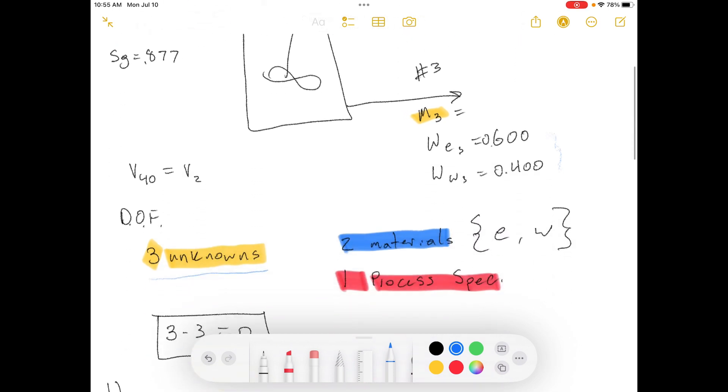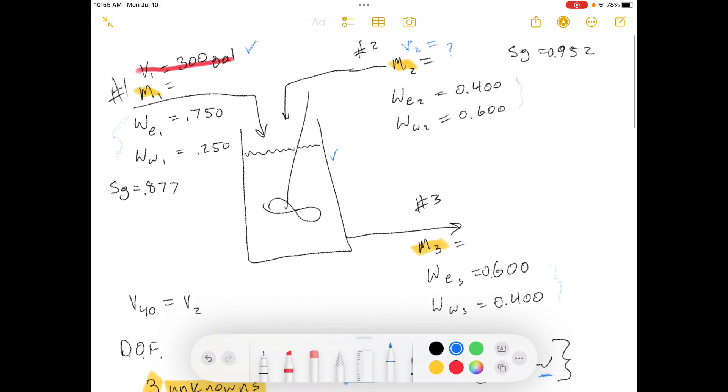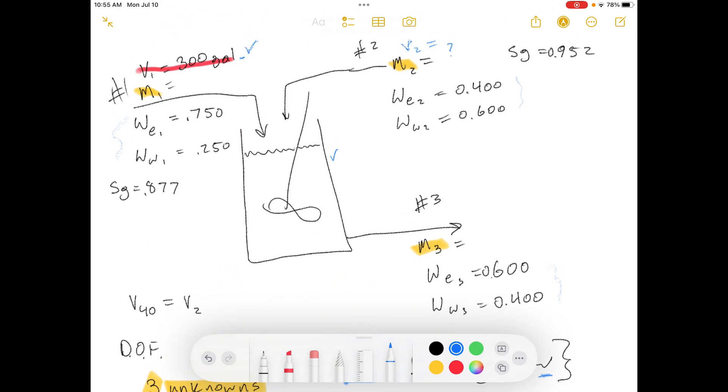We can do two material balances with our ethanol and our water, and we can do one process specification. That process spec that they gave to us was the 300 gallons right here. That's why that's highlighted in red.